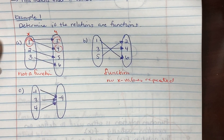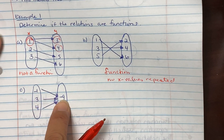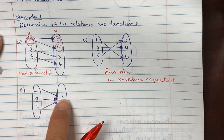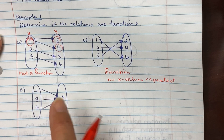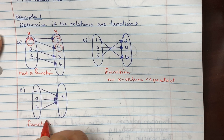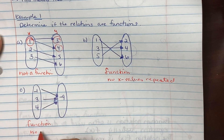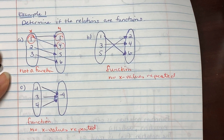On c, negative 1 goes to negative 9, 3 goes to negative 9, 4 goes to negative 9. It is also a function. Remember the rule: no x values repeated.